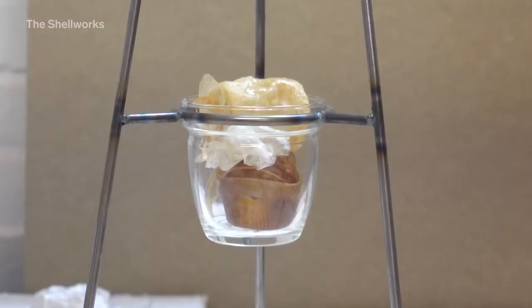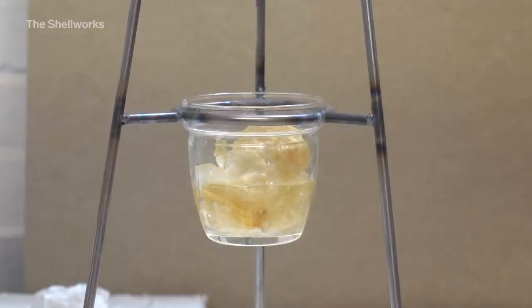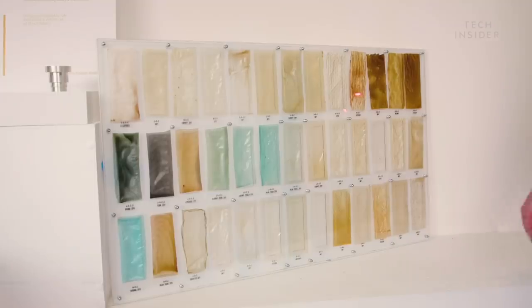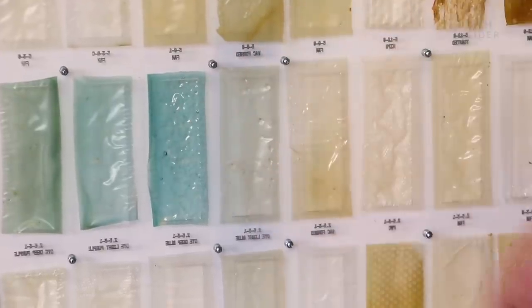The bioplastic is water-soluble, which is both a blessing and a curse. It makes it very easy to recycle, but obviously limits the applications we can do with it. So we're looking at ways of waterproofing the material with natural wax coatings that would make it more applicable for a wider range of things.